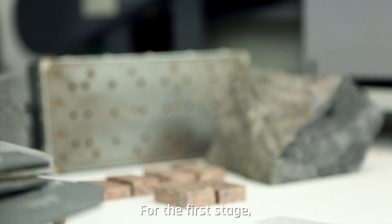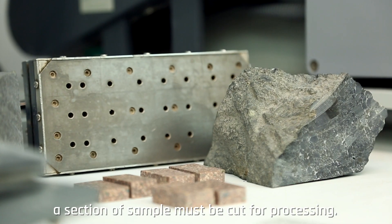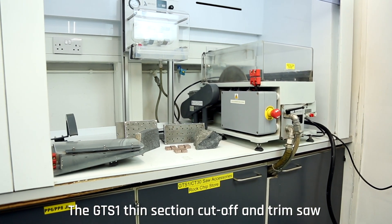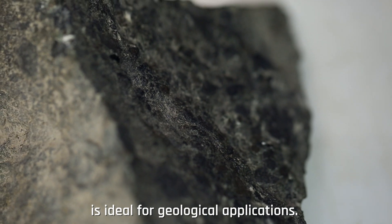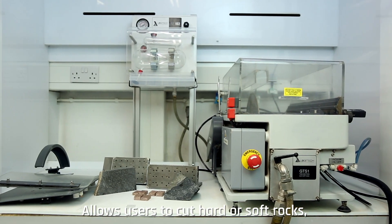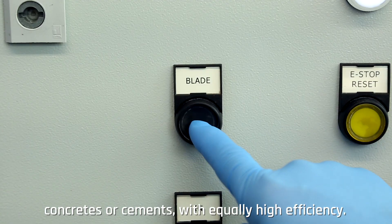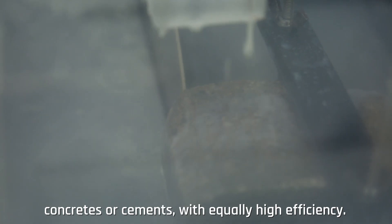For the first stage, a section of sample must be cut for processing. The GTS-1 thin section cutoff and trim saw is ideal for geological applications, allows users to cut hard or soft rocks, concretes or cements with equally high efficiency.